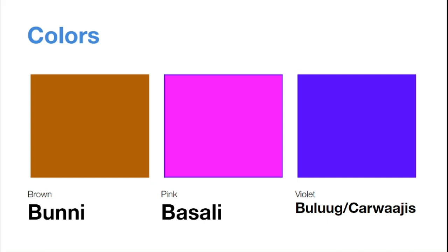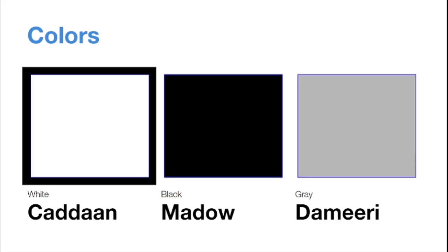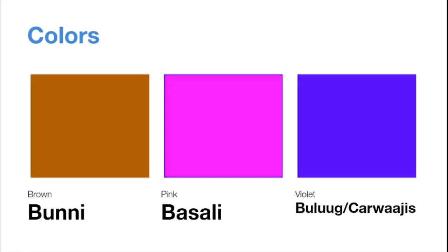Okay, let's go back to the last slide. We have white — Addan. Black — Maddo. Gray — Dameri. Brown — Bunni. Pink — Basali. And violet — Bulug or Arwajis.